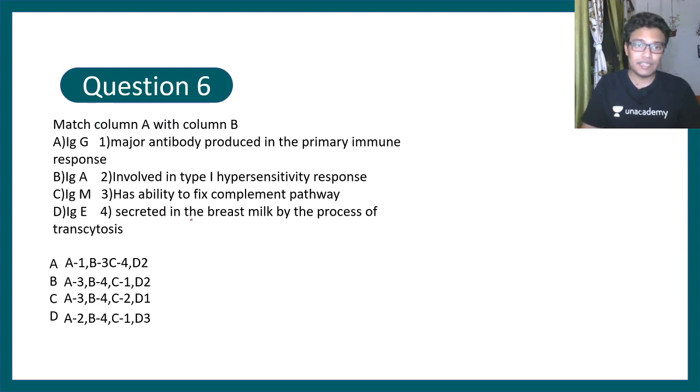Moving on to question number 6, a very popular question asked in several exams: different types of antibodies and their functions. IgG, IgA, IgM, IgE in one side, and in the other column: major antibody produced in primary immune response, involved in type 1 hypersensitivity response, has ability to fix complement pathway, secreted in breast milk by the process of transcytosis.